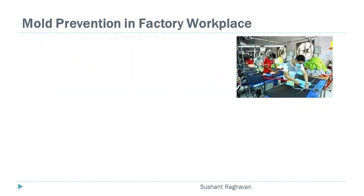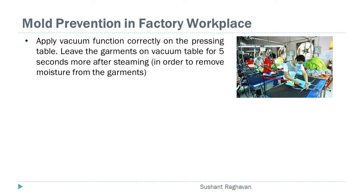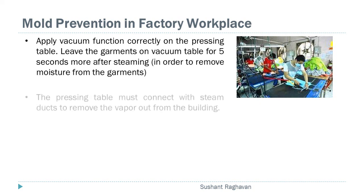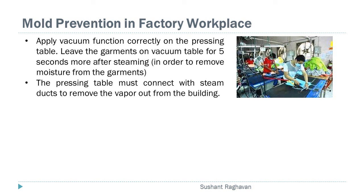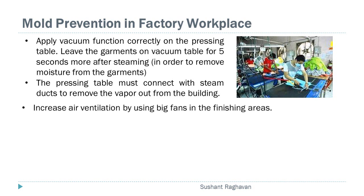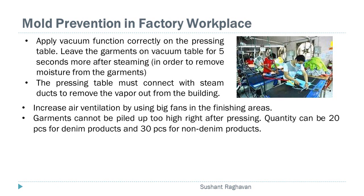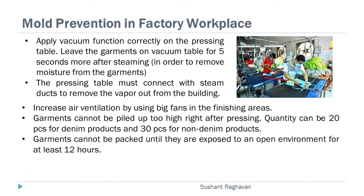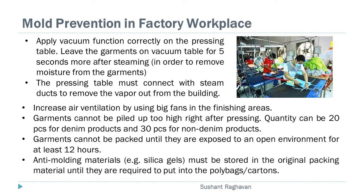Mold prevention in the factory workplace: apply vacuum function correctly on the pressing table. Leave the garments on the vacuum table for 5 seconds more after steaming in order to remove moisture from the garments. The pressing table must connect with steam ducts to remove vapour out from the building. Increase air ventilation by using big fans in the finishing areas. Garments cannot be piled up too high right after pressing — quantity can be 20 pieces for denim products and 30 pieces for non-denim products. Garments cannot be packed until they are exposed to an open environment for at least 12 hours. Anti-molding materials such as silica gels must be stored in the original packing material until they are required to be put into poly bags or cartons.